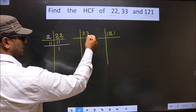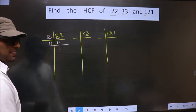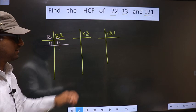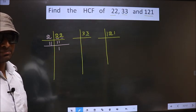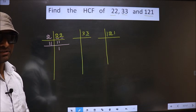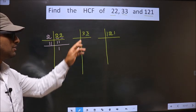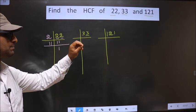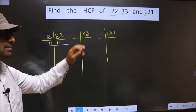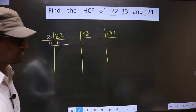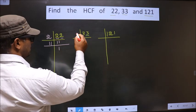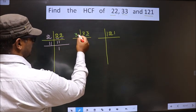Now, for this number last digit is 3 which is not even. So this is not divisible by 2. Next prime number is 3. To check divisibility by 3, we should add the digits. That is 3 plus 3, 6. Is 6 divisible by 3? Yes. So this number also divisible by 3. So we take 3 here.